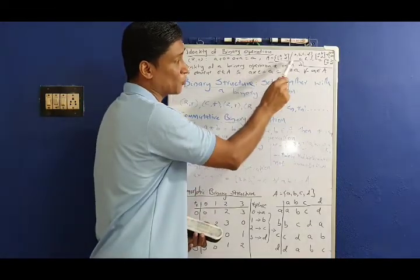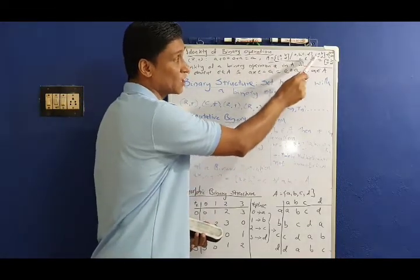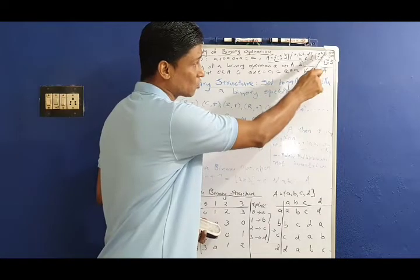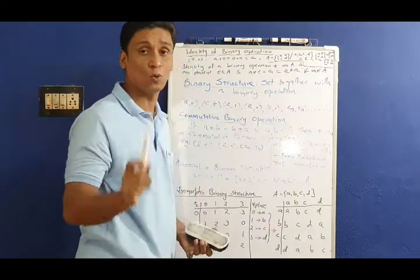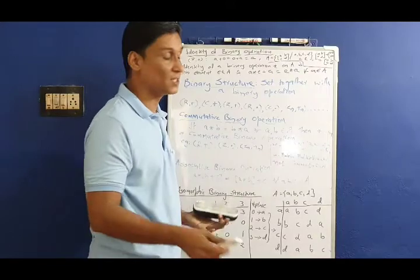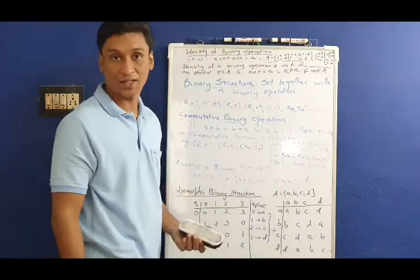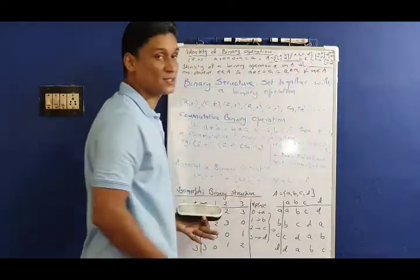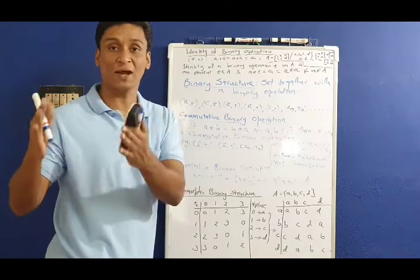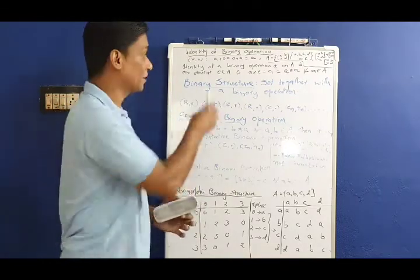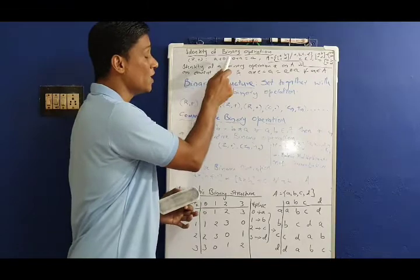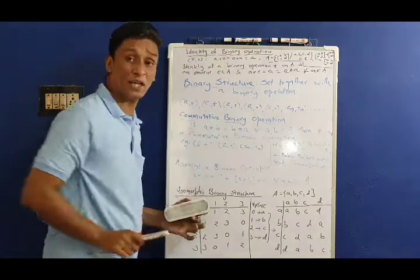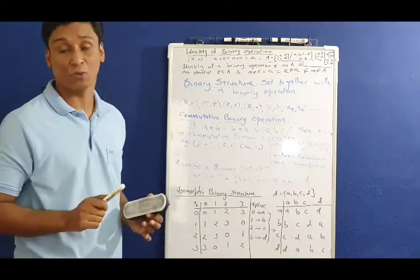For the binary operation on 2 by 2 matrices, consider a matrix with entries A, B, C, D. We add the zero matrix — the 2 by 2 zero matrix with all entries 0. If A plus the zero matrix equals the zero matrix plus A equals A, then the zero matrix is the identity of this binary operation.